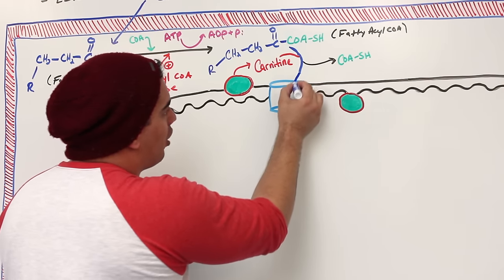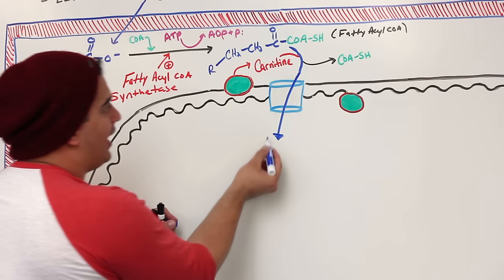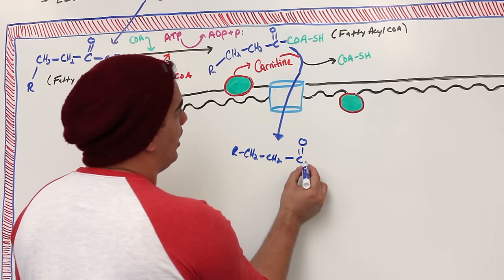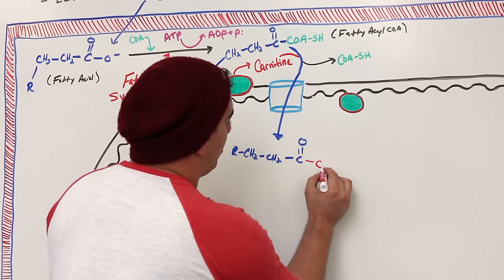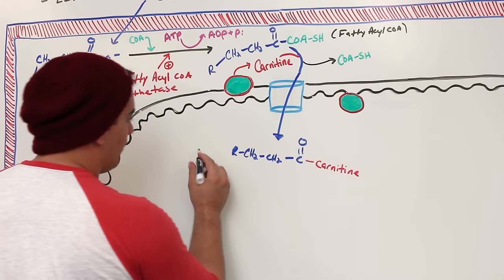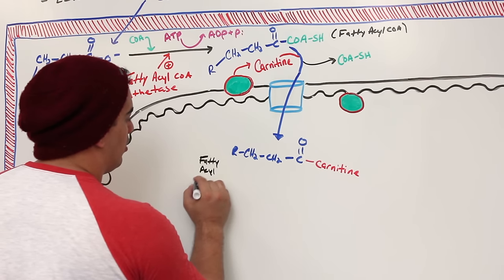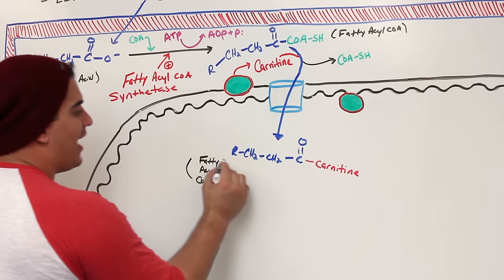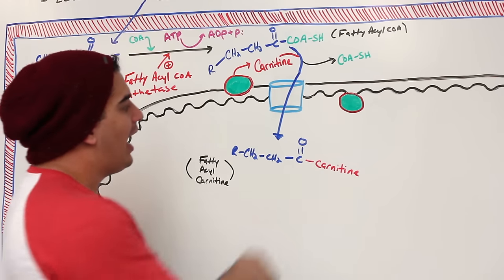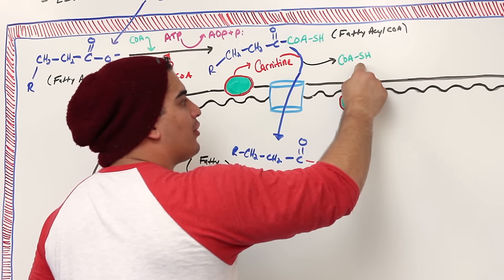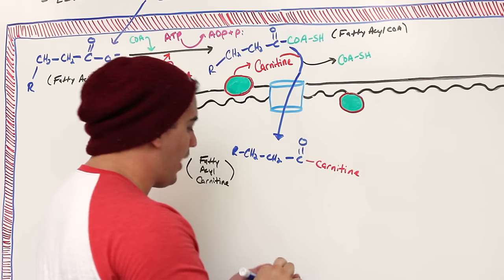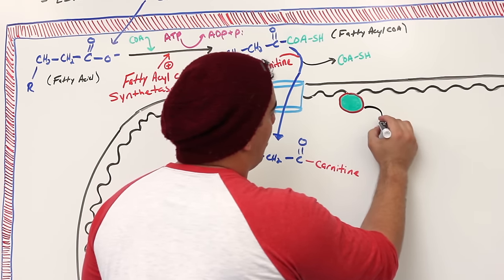The fatty acyl carnitine is transported through a translocase into the mitochondrial matrix. On the other side, we have fatty acyl carnitine again. But here's the next problem: it could easily go back out through that bi-directional translocase, so we have to rip the carnitine off and add another coenzyme A back onto it.